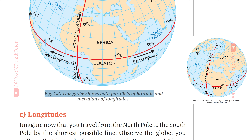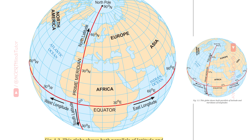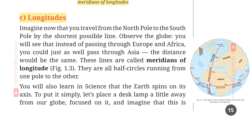Figure 1.3 shows both parallels of latitude and meridians of longitudes on the globe as blue lines. You can see the prime meridian, north pole (90°N), north latitude, south latitude, east longitude, west longitude, Atlantic Ocean, North America, Europe, Asia, Indian Ocean, Africa, and the main equator. C: Longitudes — देशांतर।